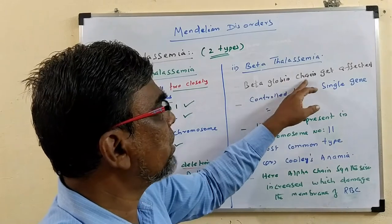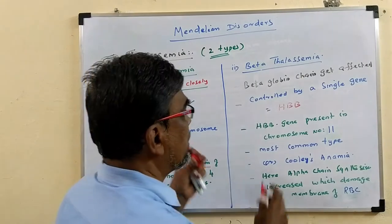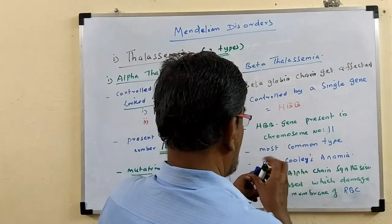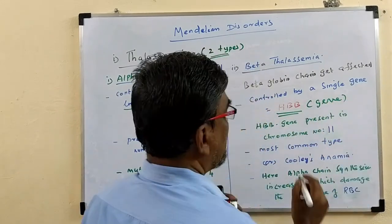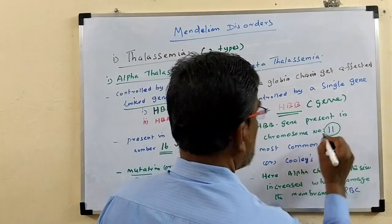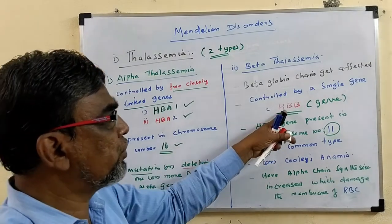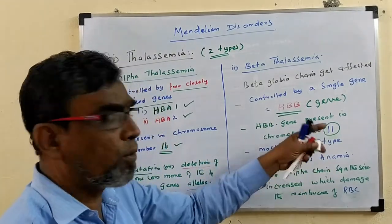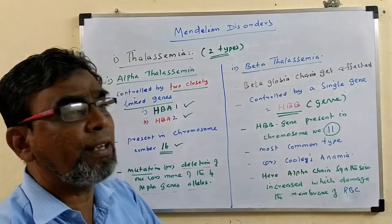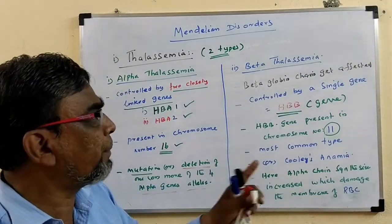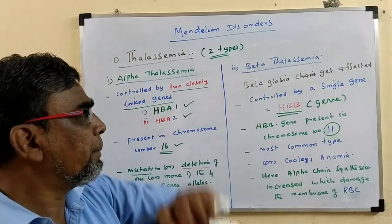The beta globin chain gets affected. This is controlled by a gene called HBB, which is present in chromosome number 11. For Alpha Thalassemia the genes HbA1 and HbA2 are present in chromosome number 16, while the HBB gene is present in chromosome number 11. The HBB gene gets altered or mutated, and because of this alteration, an abnormal beta chain forms, leading to the disease called Beta Thalassemia.